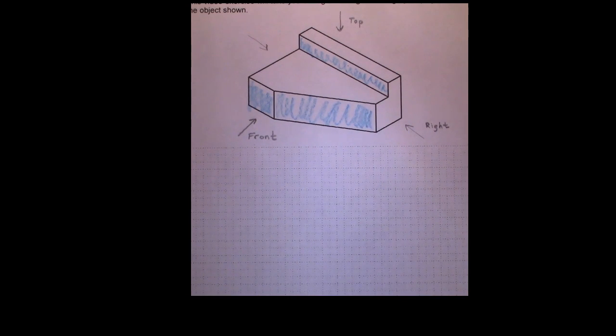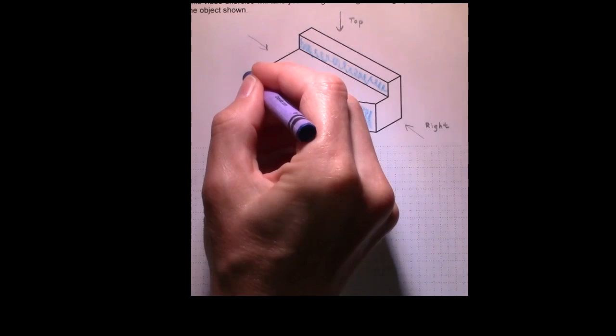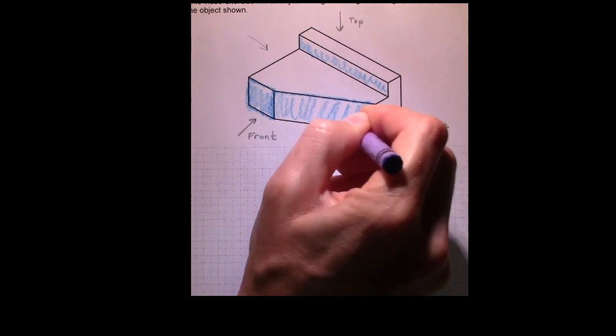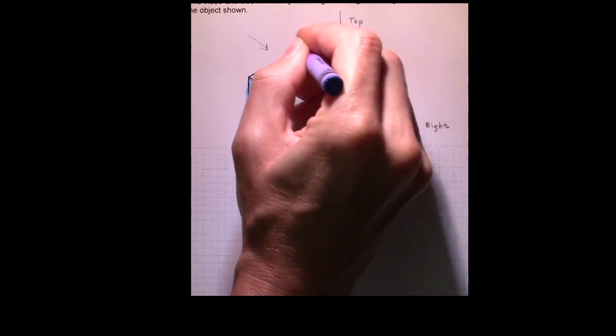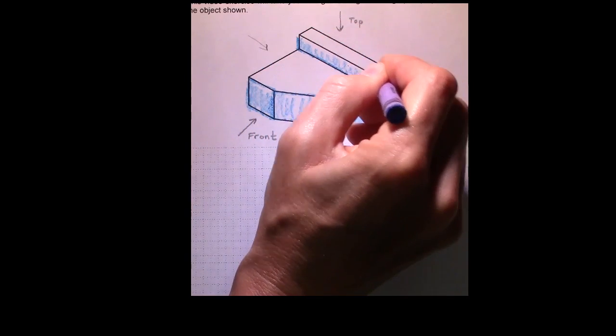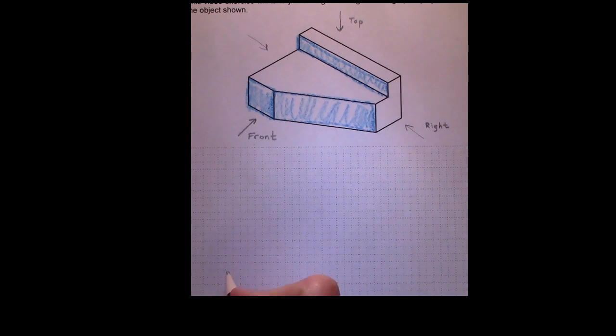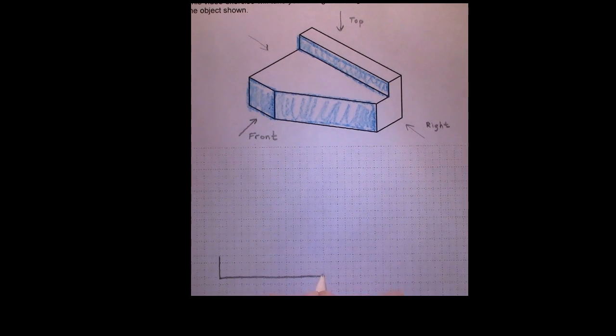So let's go ahead and draw that. When we draw it, we're going to see these shapes. That's what we should see in the front view. Now we don't have any dimensions, that's fine, we'll just kind of guess at the distances.